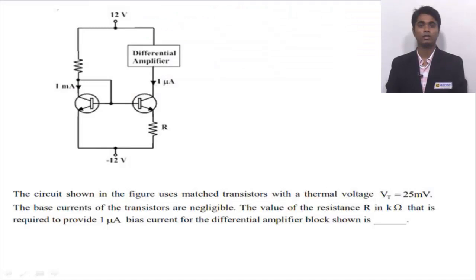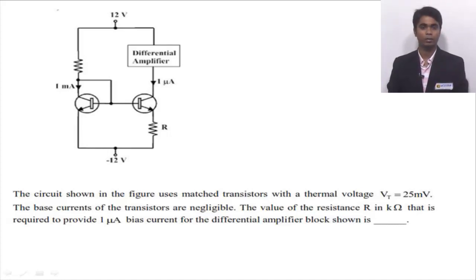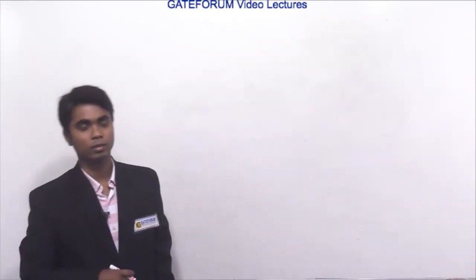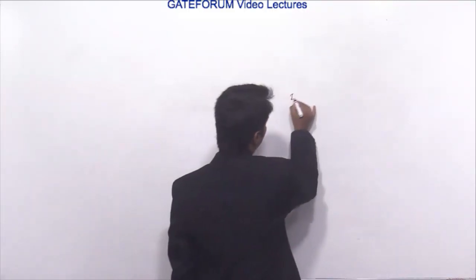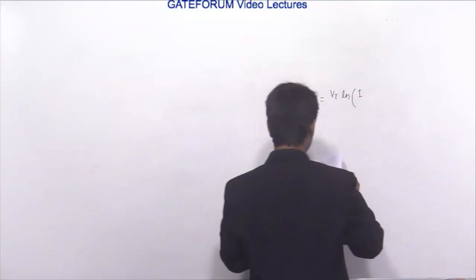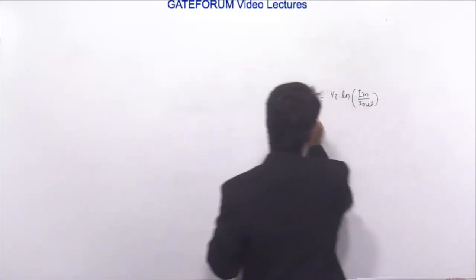The next circuit uses matched transistors with thermal voltage Vt = 25 millivolt. Base current is negligible. We need to find the resistor value in kilohms required to provide 1 microampere bias current for the differential amplifier. The given circuit is a Widlar current mirror. In a Widlar current mirror: Iout × Re = Vt × ln(Iin / Iout).